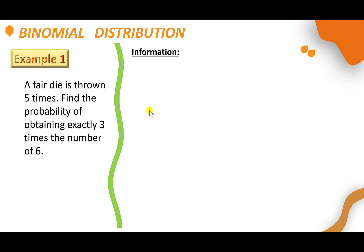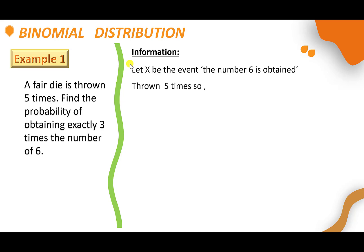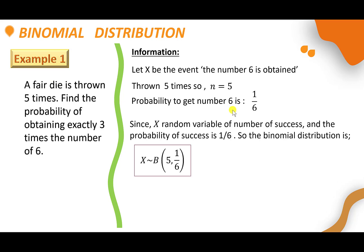Example 1: a fair die is thrown 5 times. Find the probability of obtaining exactly 3 times the number 6. Let X be the event that the number 6 is obtained. The die is thrown 5 times, so n = 5. The probability of getting a 6 is 1/6, since a fair die means each surface is equally likely. We write this in binomial notation as X ~ B(5, 1/6). Since the question asks for exactly 3 sixes, we find probability X = 3.